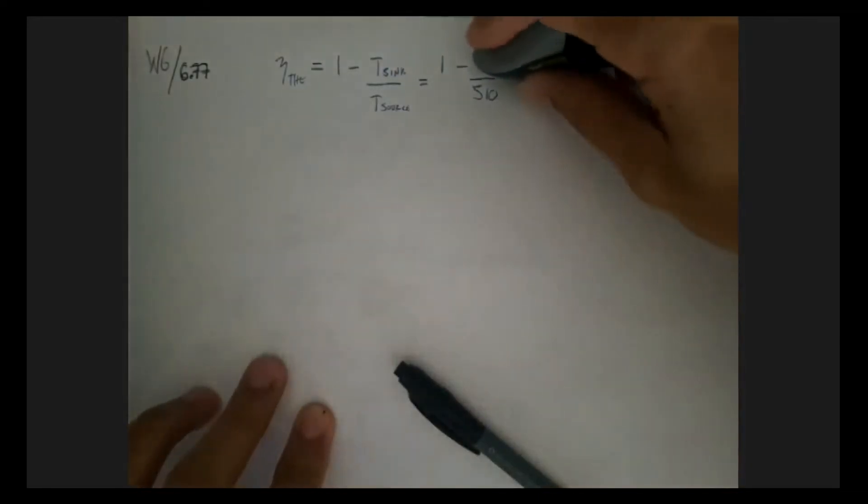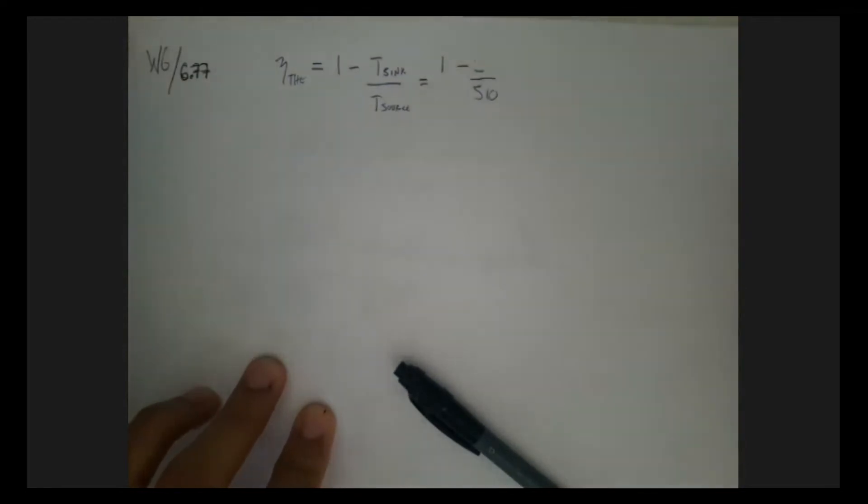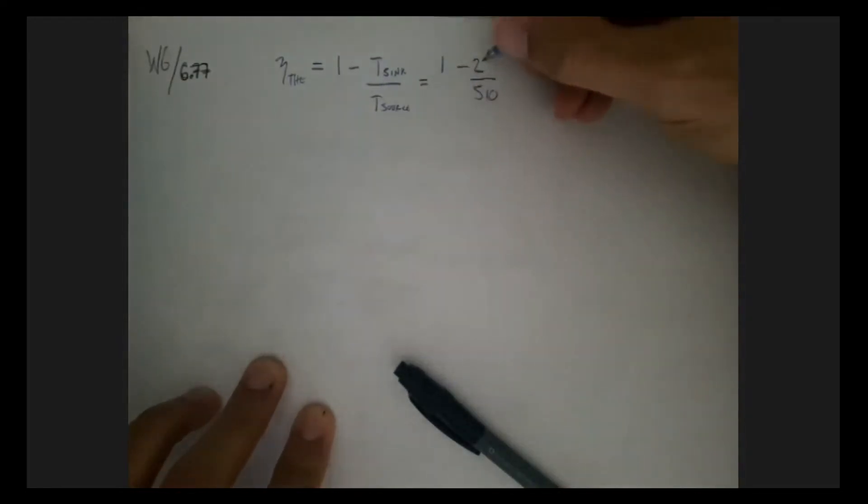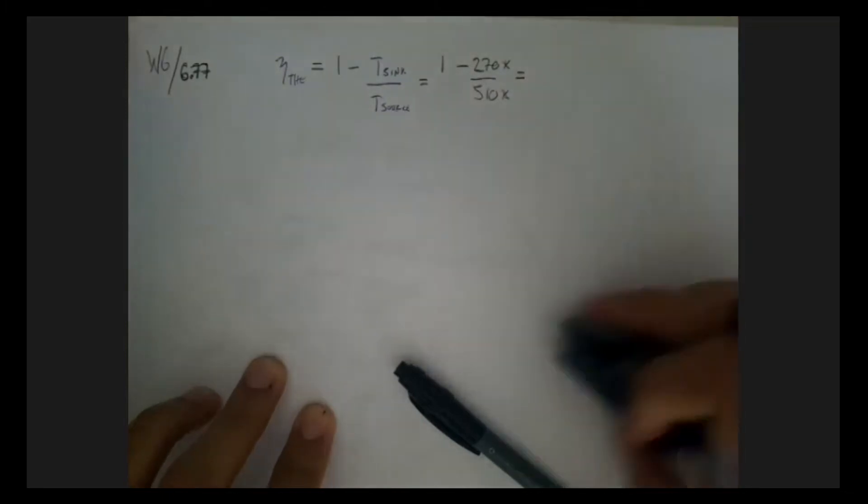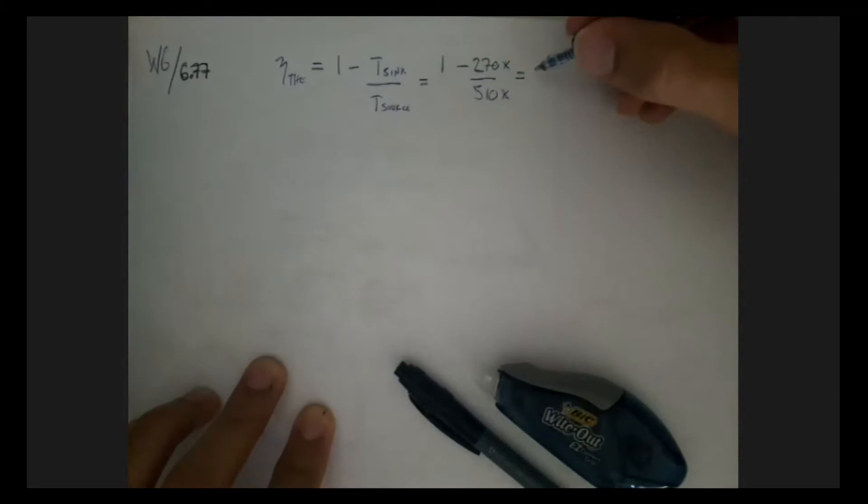That's more about my part. I should get that one out of the way. 270. They're both in Kelvin, so the Kelvin goes away. And we're left only with the ratio, which is our efficiency. This turns out to be 47.06%.